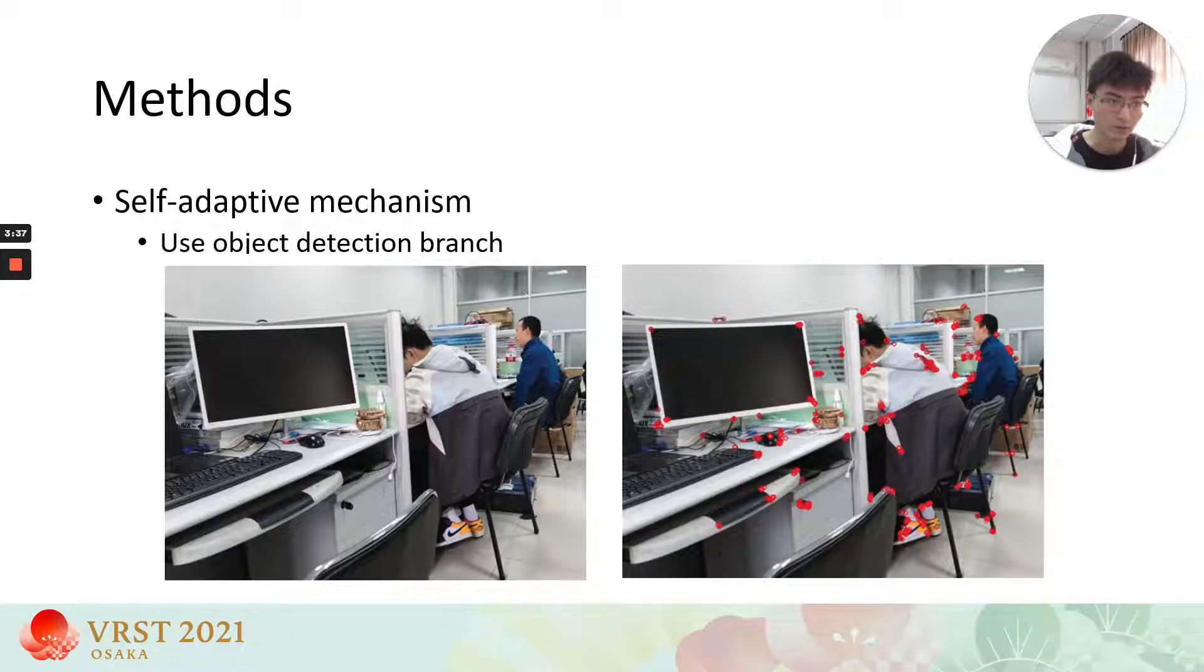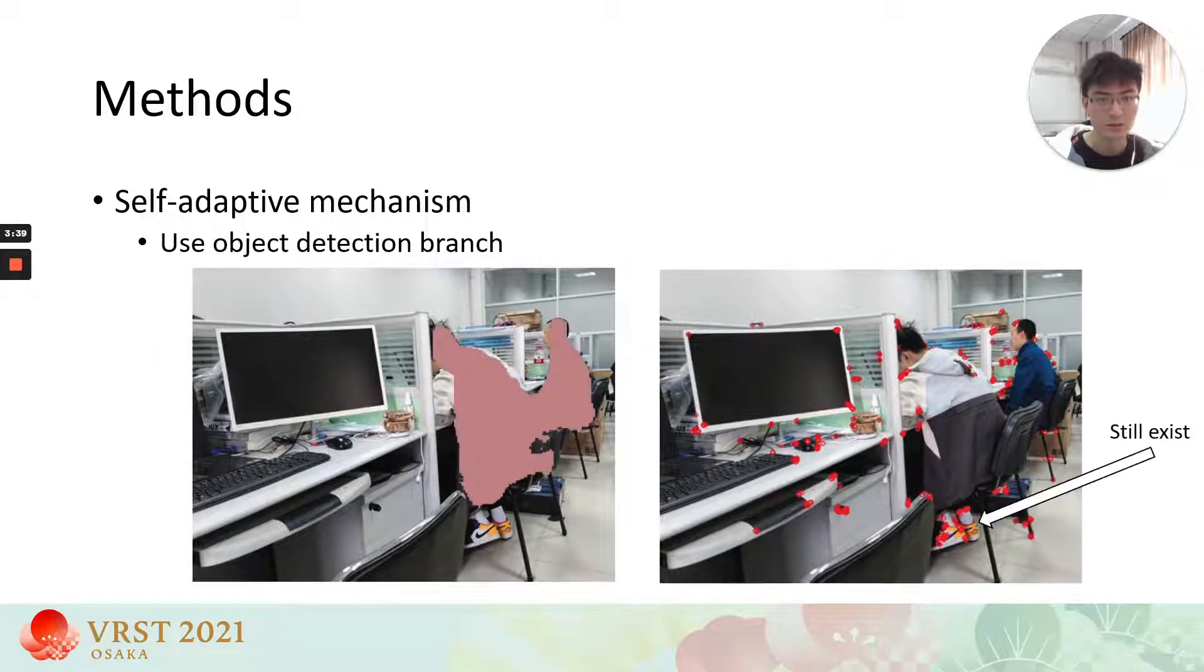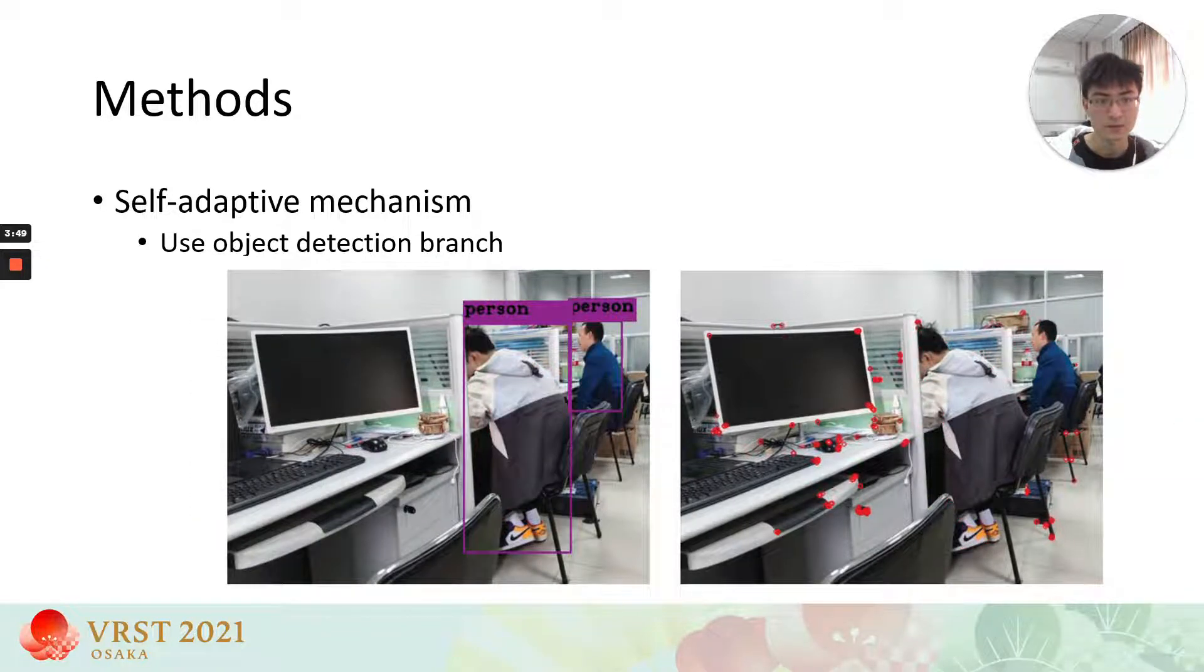In another scenario, when moving objects are small, if we use the segmentation mask to remove feature points, the dynamic points on the edge of a dynamic object still exist. So we use a object detection branch to overcome this shortcoming.